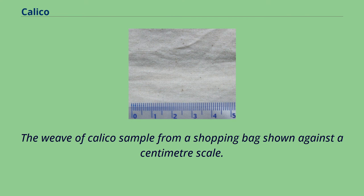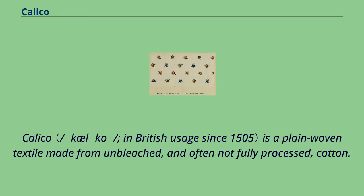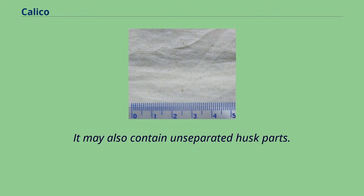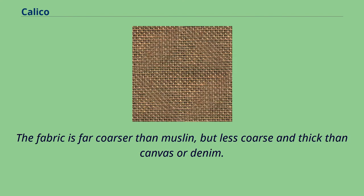The weave of calico sample from a shopping bag shown against a centimeter scale. Calico is a plain woven textile made from unbleached, and often not fully processed, cotton. It may also contain unseparated husk parts. The fabric is far coarser than muslin, but less coarse and thick than canvas or denim.